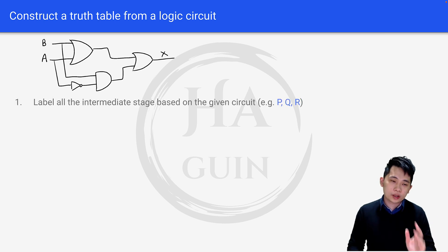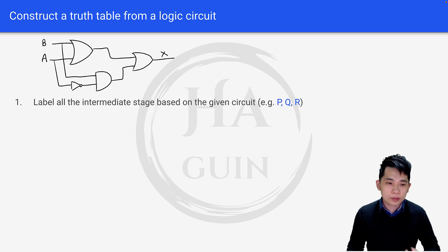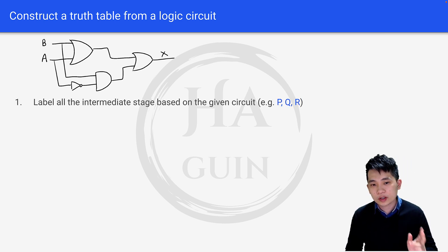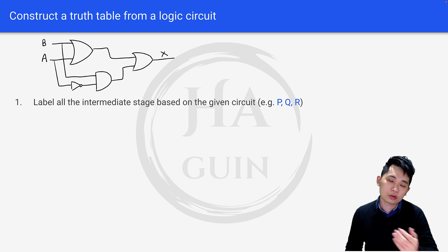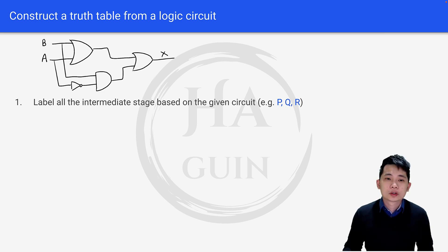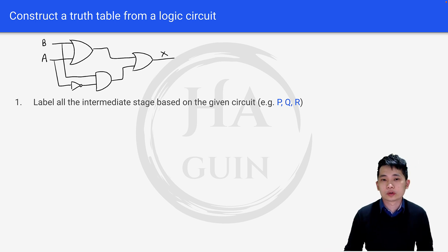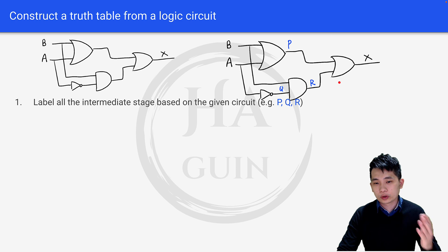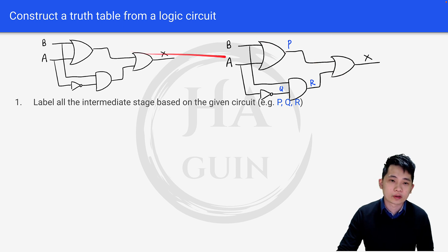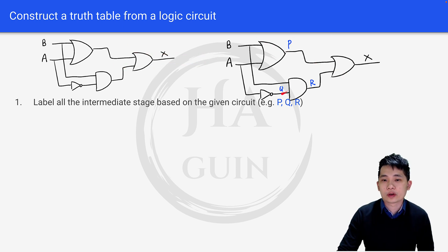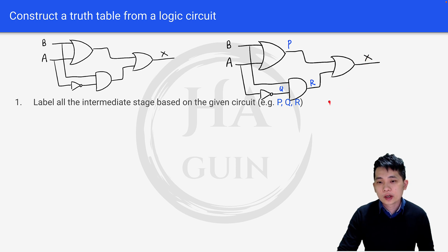The first thing I'm going to do is label all the intermediate stages based on the given circuit, such as P, Q, R, or any alphabet you like. After doing all the labeling, we're going to have P here, Q here, R here, and X here.